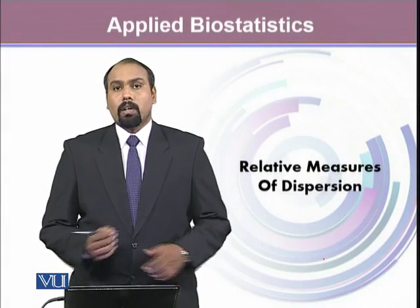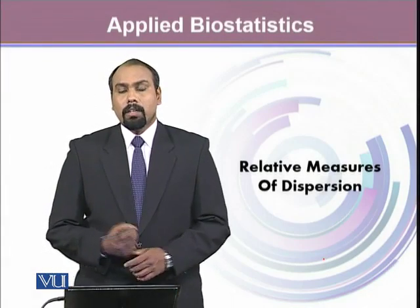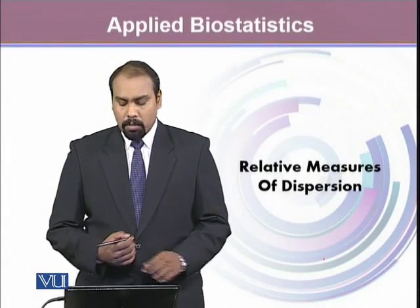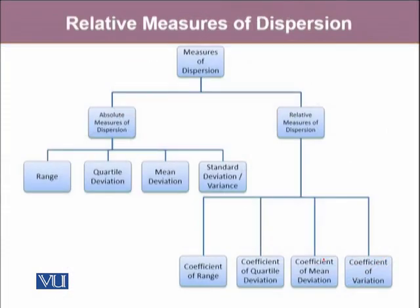In this module, we'll be talking about the relative measures of dispersion. These measures of dispersion are divided into two types: absolute measures of dispersion and relative measures of dispersion. We already know that all absolute measures of dispersion have their corresponding relative measures of dispersion.